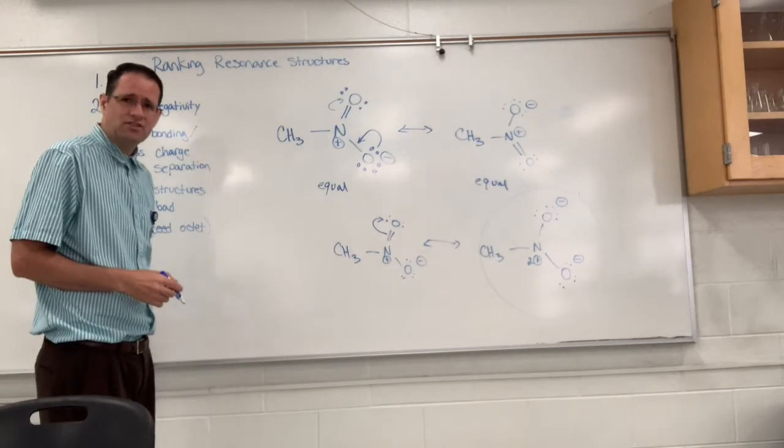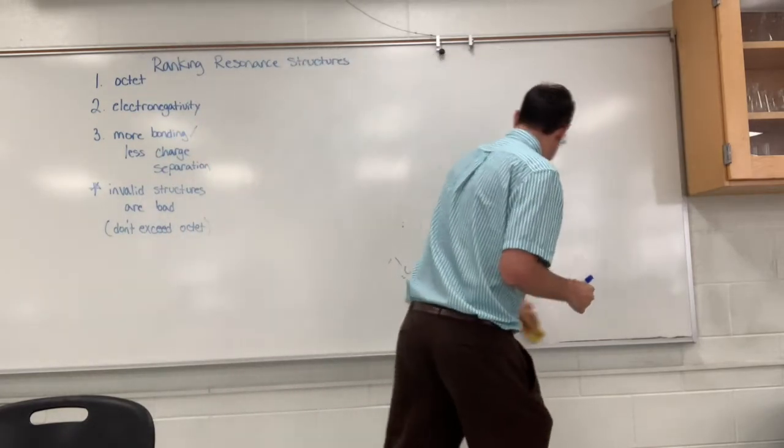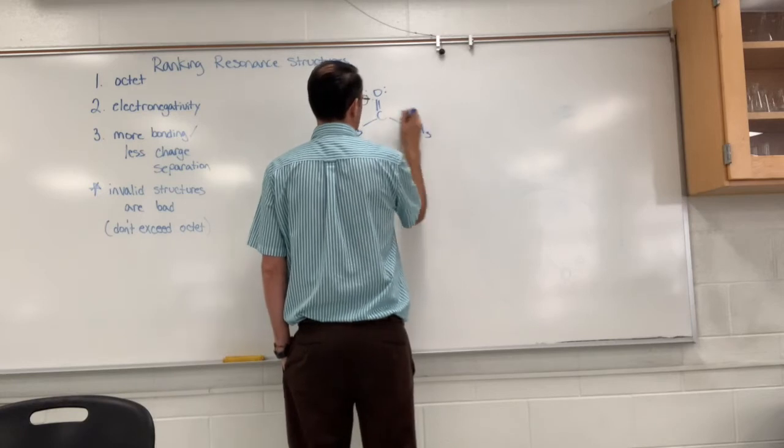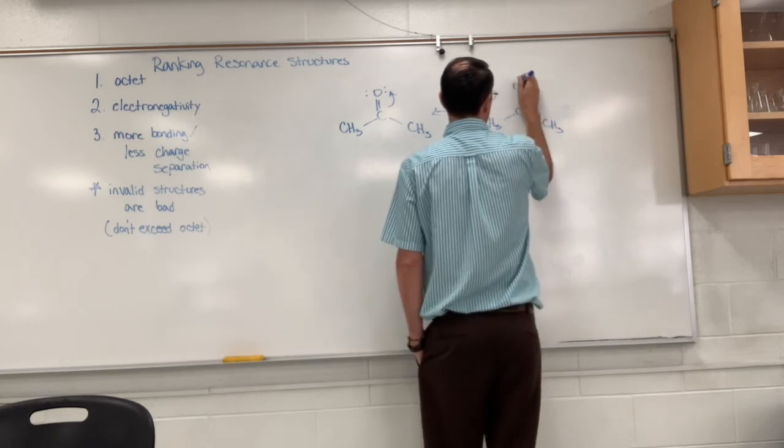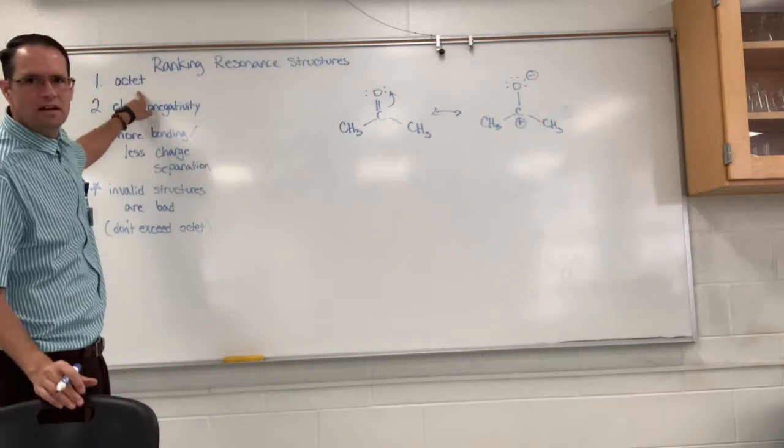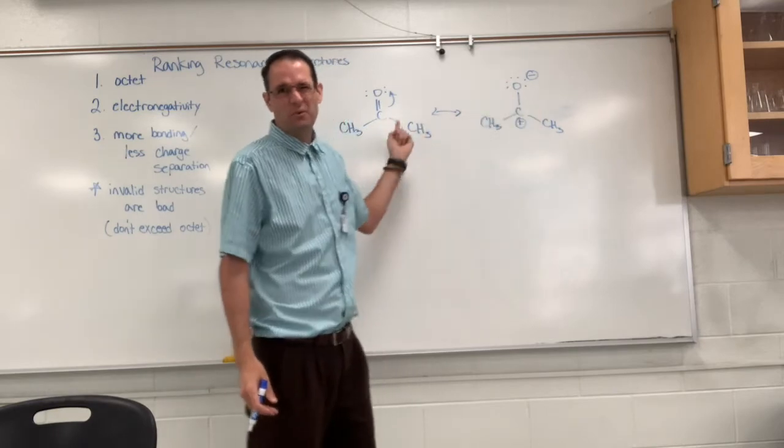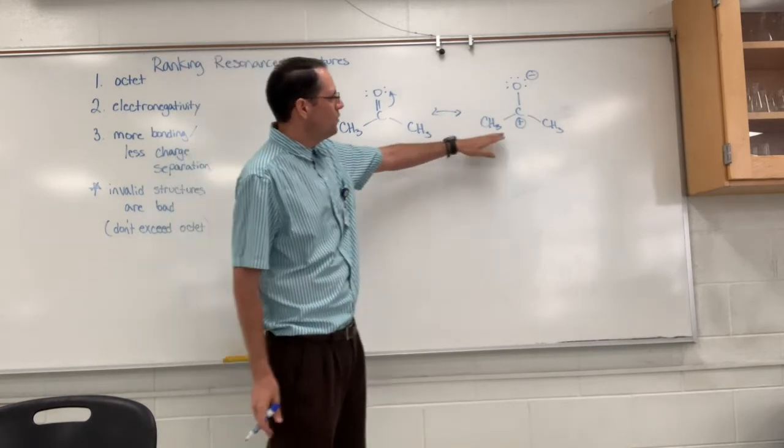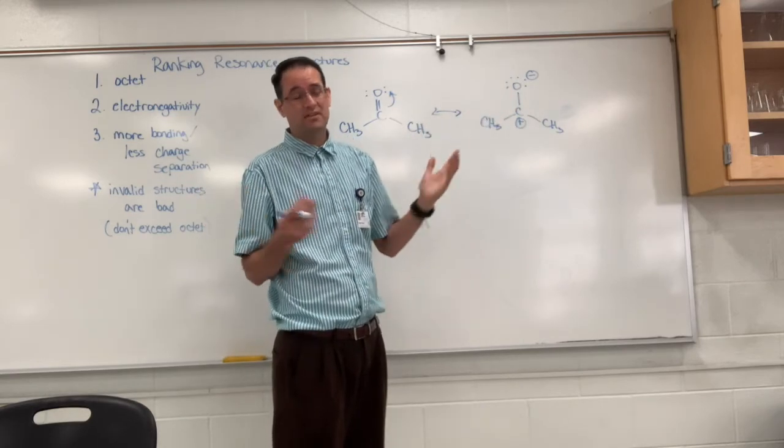A valid resonance structure that you can draw that's not as good as the original would be as follows. You can very easily decide between these two using rule number one, which is the octet. Everything has an octet here, not here. So we would say that's the major contributor and that's the minor contributor. You could also further analyze it and decide that this one here has one less pi bond and it has charges that are separated, so that's what makes it unstable.